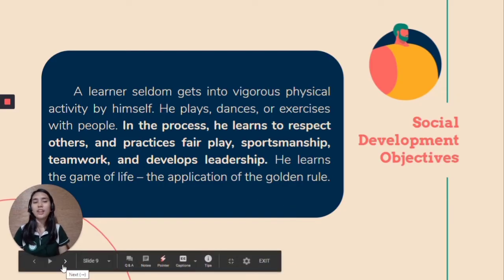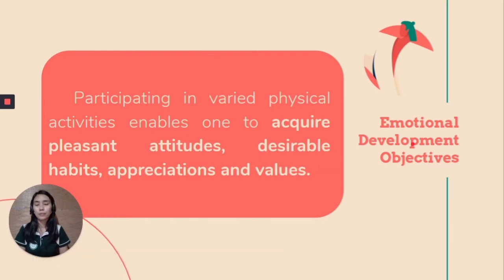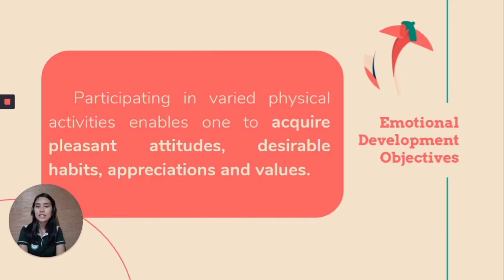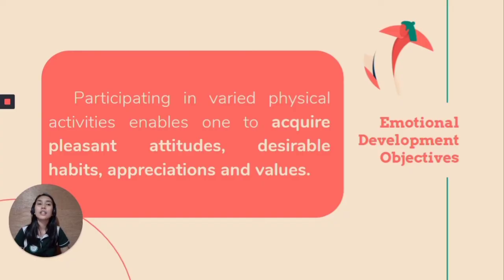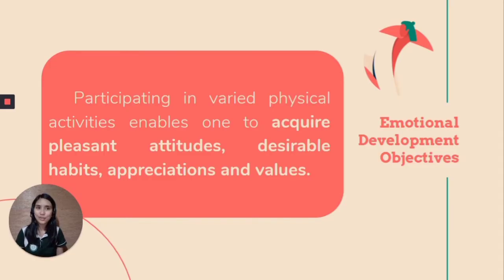The emotional development objective relates to our values. Participating in varied physical activities enables one to acquire pleasant attitudes, desirable habits, and appreciation of values. Our emotional development relates to how we handle ourselves in a certain game or exercise plan. It enables us to develop our emotional aspects — pleasant attitudes, habits, and values. Those are the four objectives of physical education.